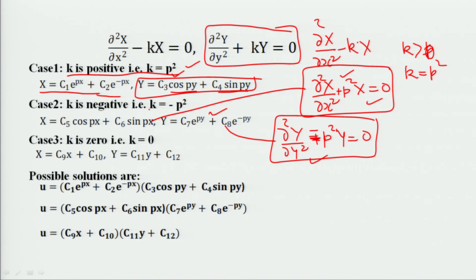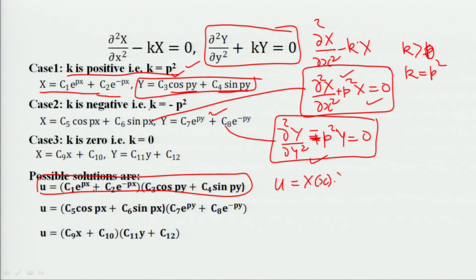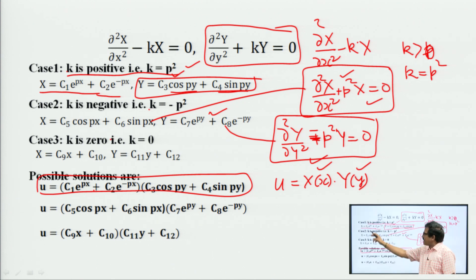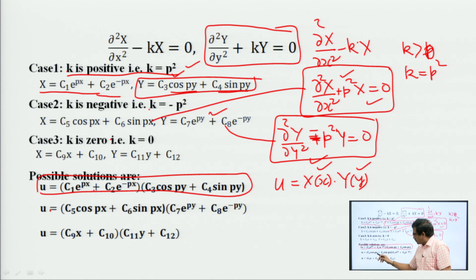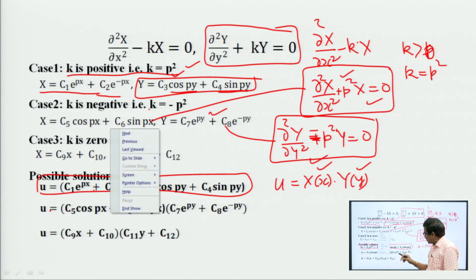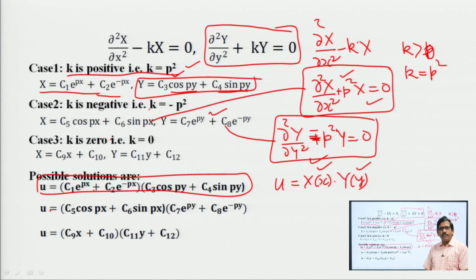We can simultaneously see the complete solution. For the first case, the complete solution is the product of the x-component and the y-component, because initially we assumed u is a function of x times a function of y — the obtained solution of X must be multiplied by the obtained solution of Y. In the second case when k is negative, u equals the trigonometric component of x multiplied by the exponential component of y.